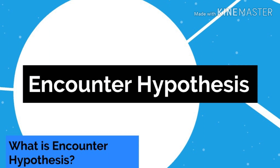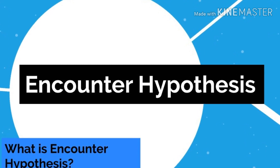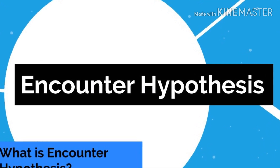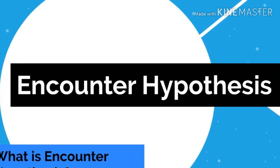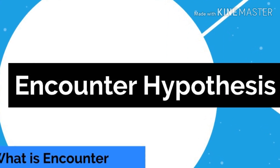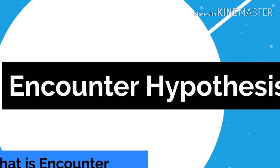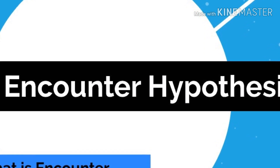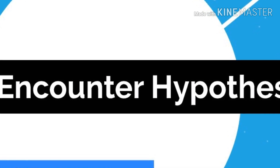Our first topic is about the encounter hypothesis. Encounter hypothesis is one of the earliest theories for the formation of the planets. In this scenario, a rogue star passes close to the sun about five million years ago, and material in the form of hot gas is tidally stripped from the sun. The rogue star hypothesis was first proposed in 1734 by Emanuel Swedenborg and later elaborated and expanded upon by Emanuel Kant in 1755.